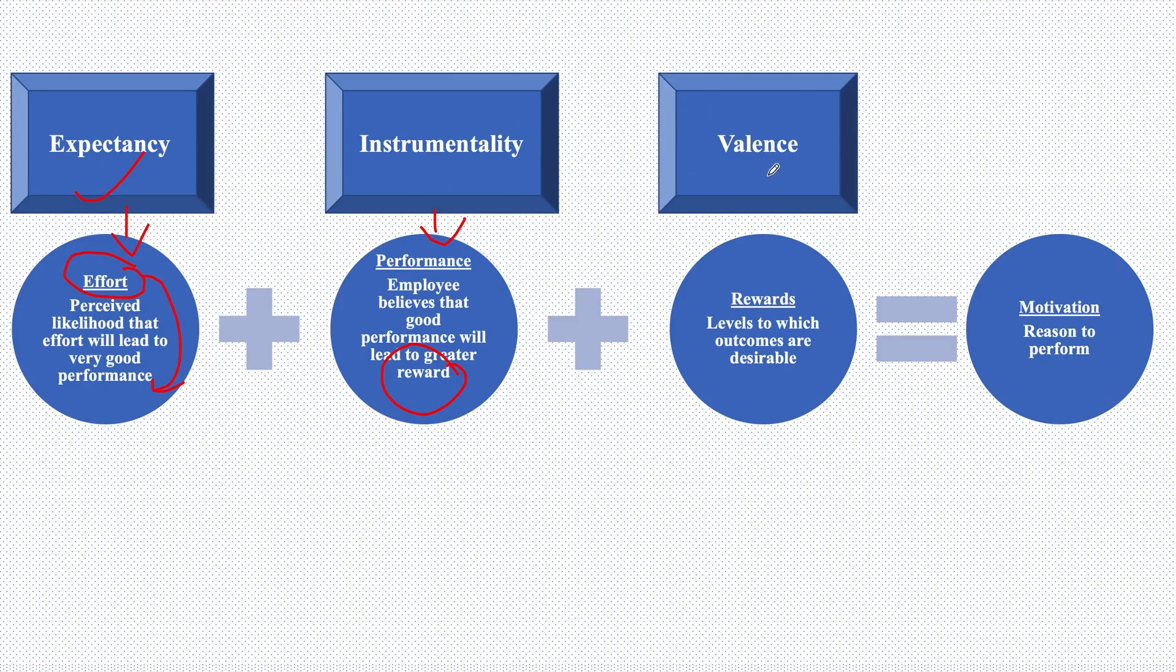Now third is valence. What does this mean? It is related to your rewards - levels to which outcomes are desirable. Now, if you have appeared nicely, if you have attempted the entire paper and out of 100, if you get 98%, what is that? That 98% is the outcome of your hard work. Which is desirable? Yes, it is desirable. Why? Because it's a very good marks, a very good number. So what is valence? It's related to your reward - level to which outcomes are desirable.